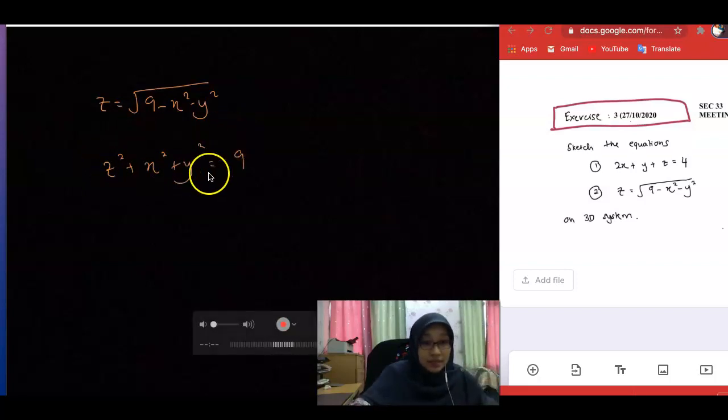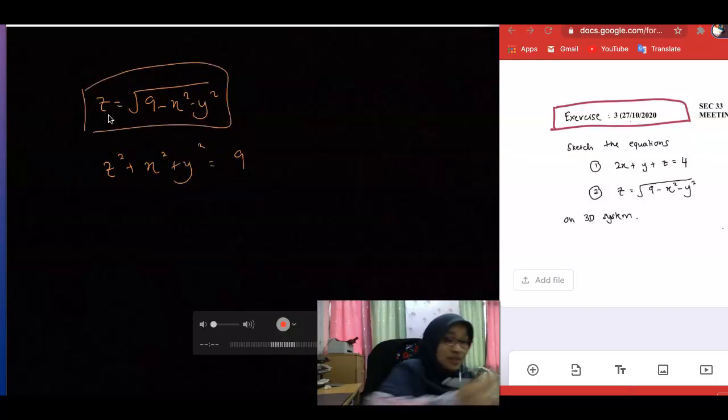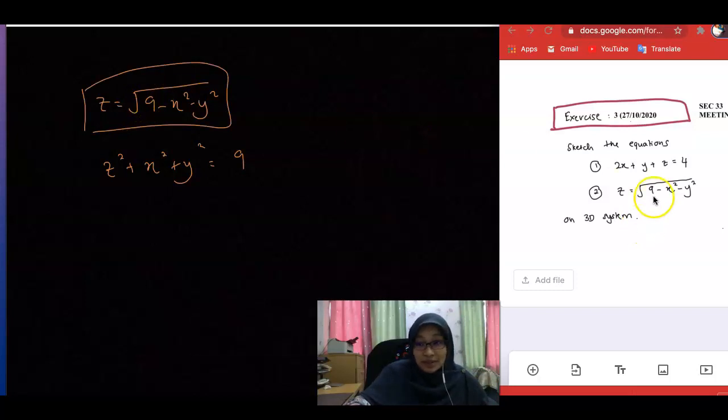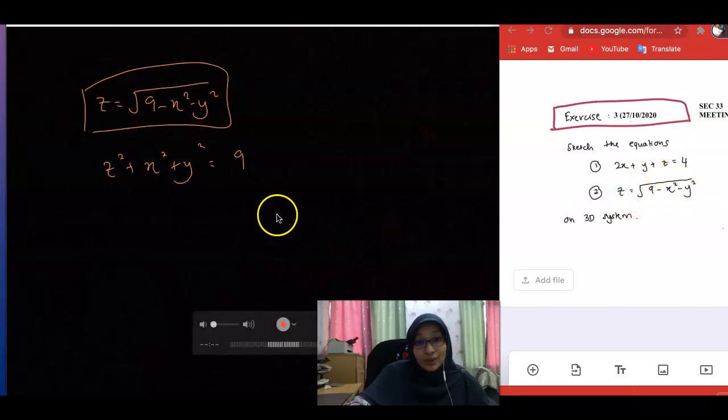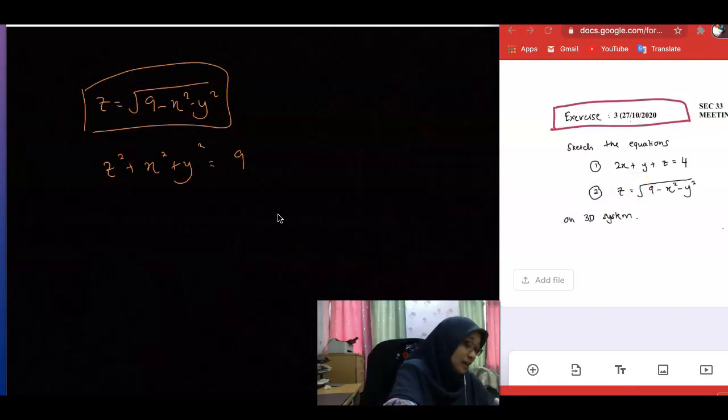If the original expression is given to you in this form, yes, you have a sphere, a complete sphere with radius 3 centered at the origin. But if the original expression is given to you in this form, which is what I gave you in the exercise, then z is always positive. So we have only a hemisphere.